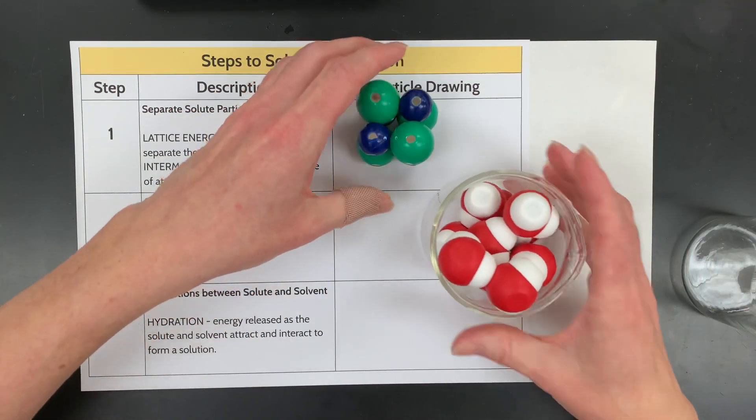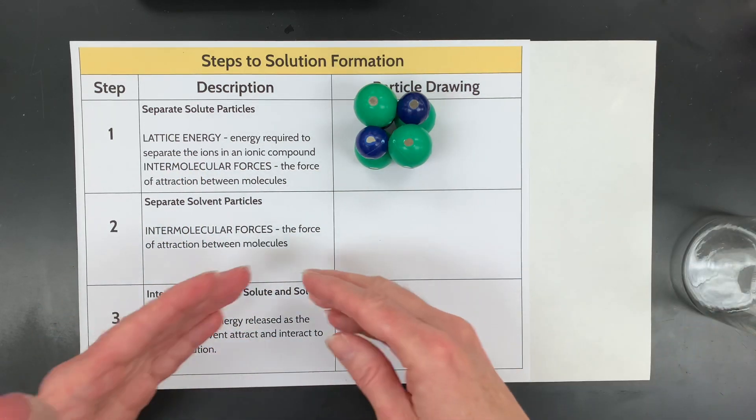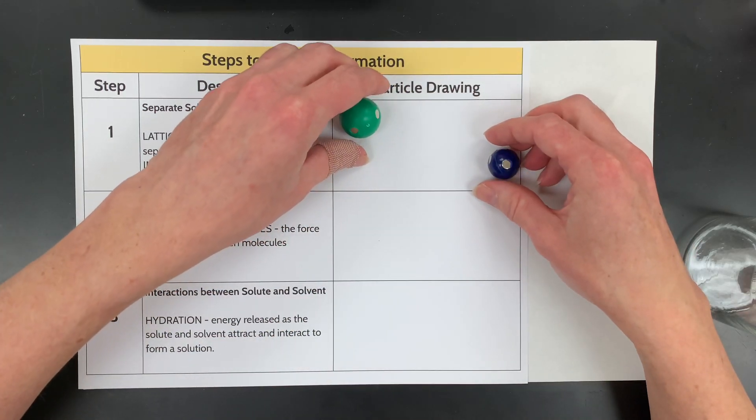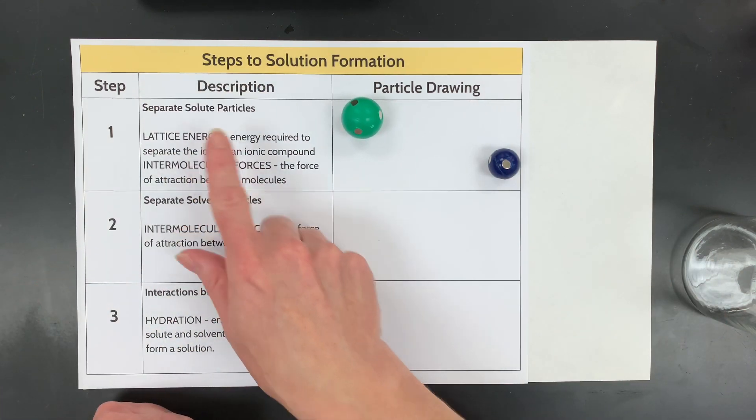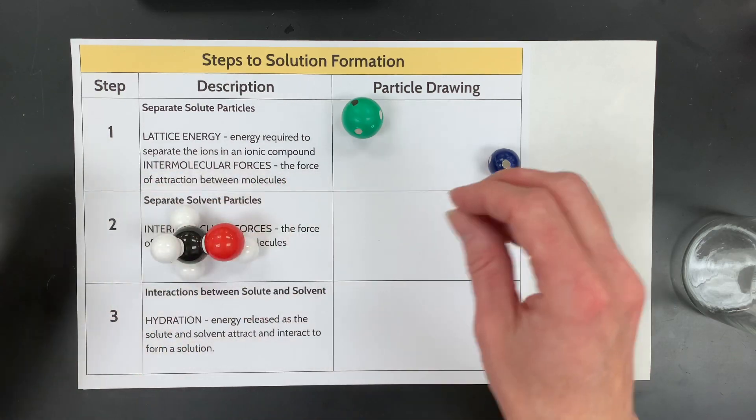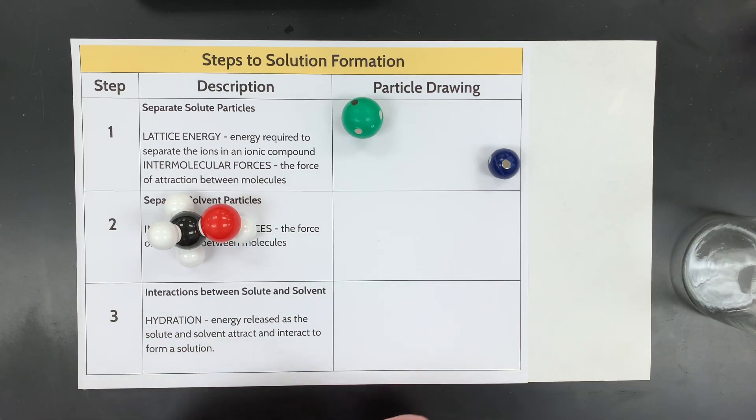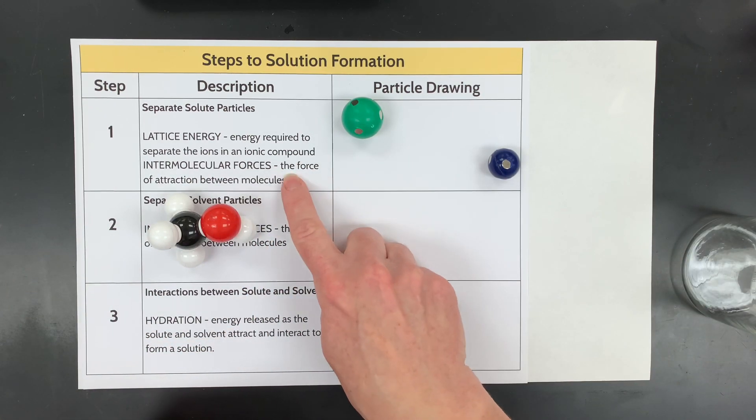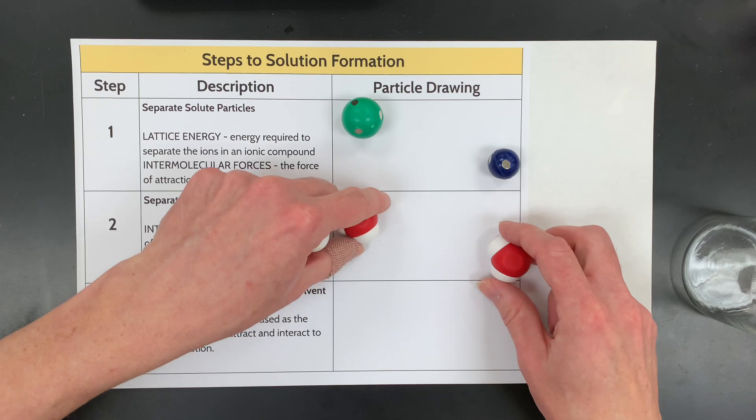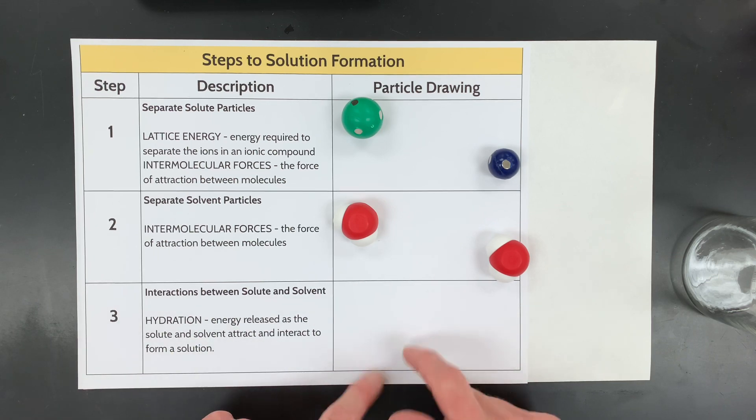So what you want to do is kind of start out with your little particle drawing. So here's my water here. But what I need to do is step one and two are separating these so that we can pull them apart so they can interact. Step one is to pull apart that crystal lattice if it's an ionic compound. Or if you had a bunch of methanol molecules, you have to separate the molecule from each other so that it can interact. And that's what are called intermolecular forces.